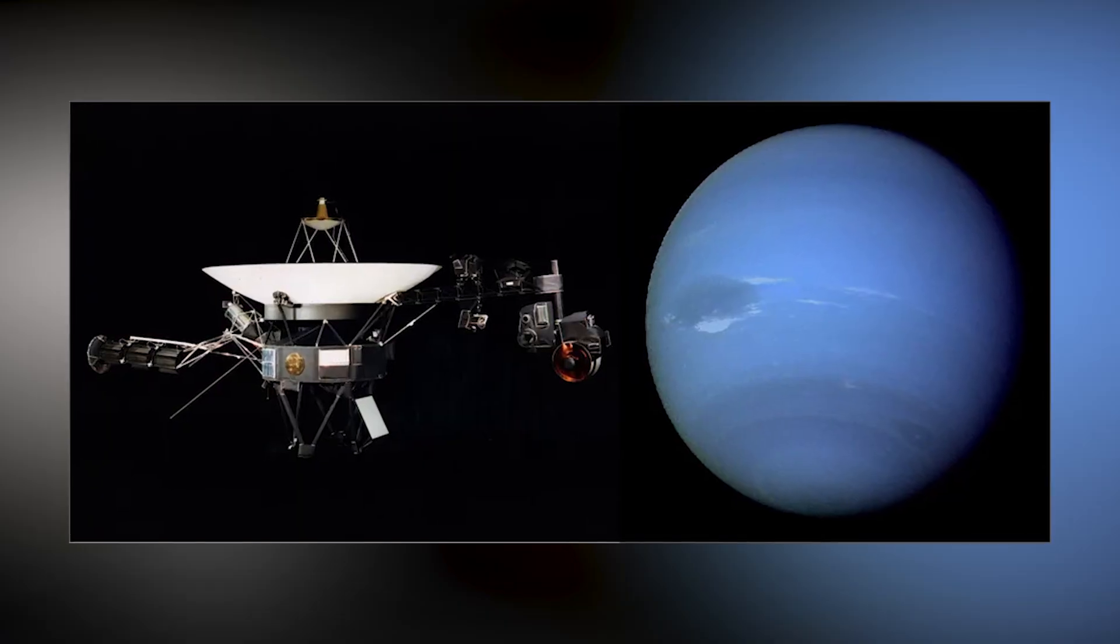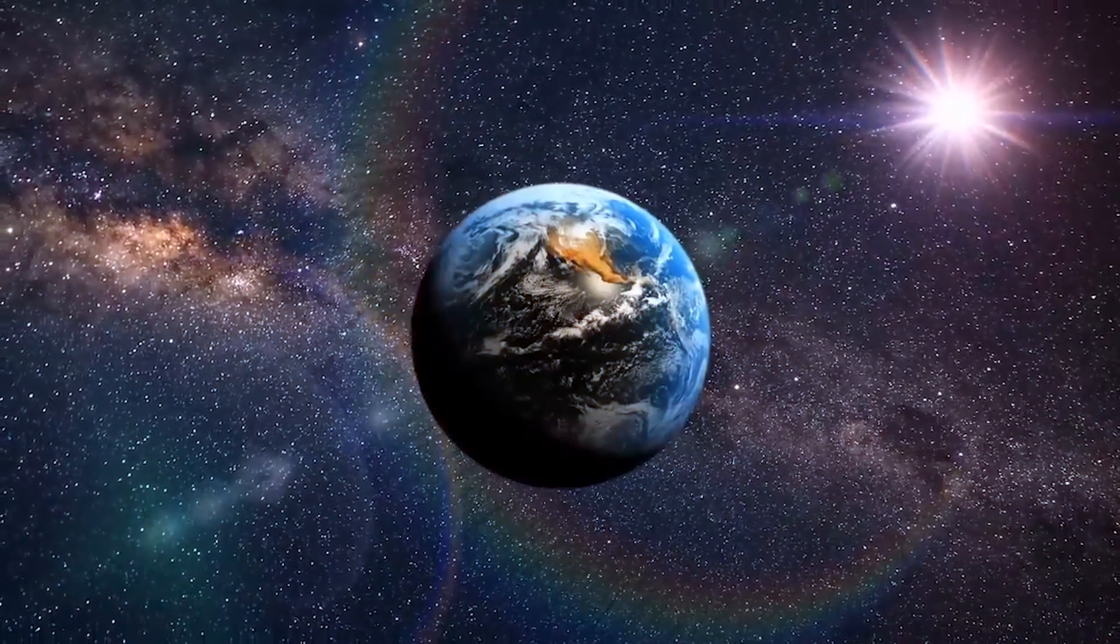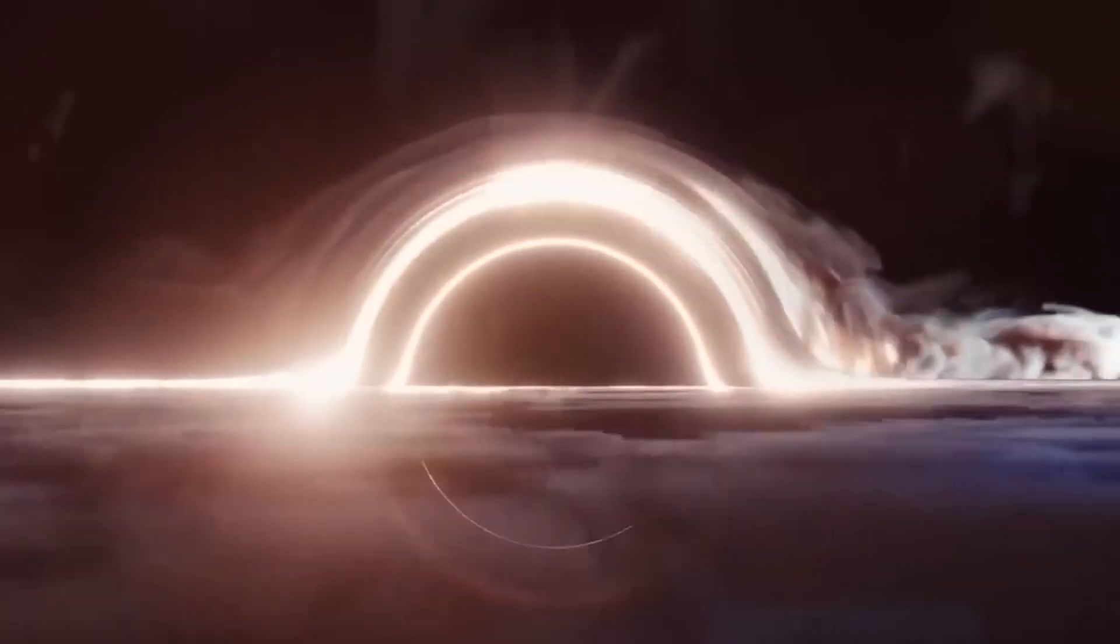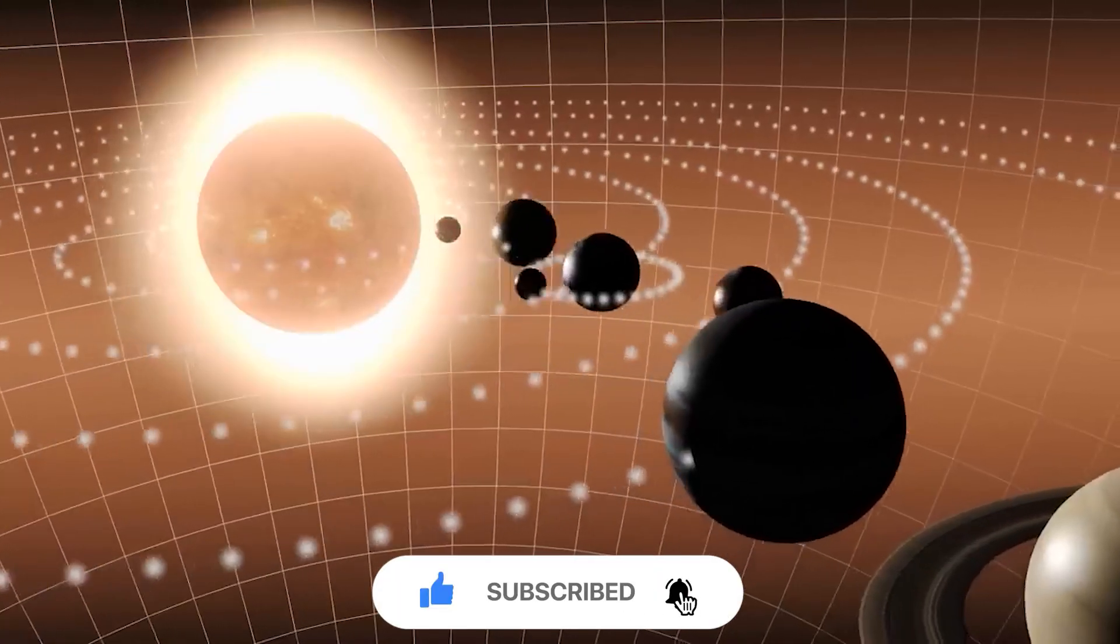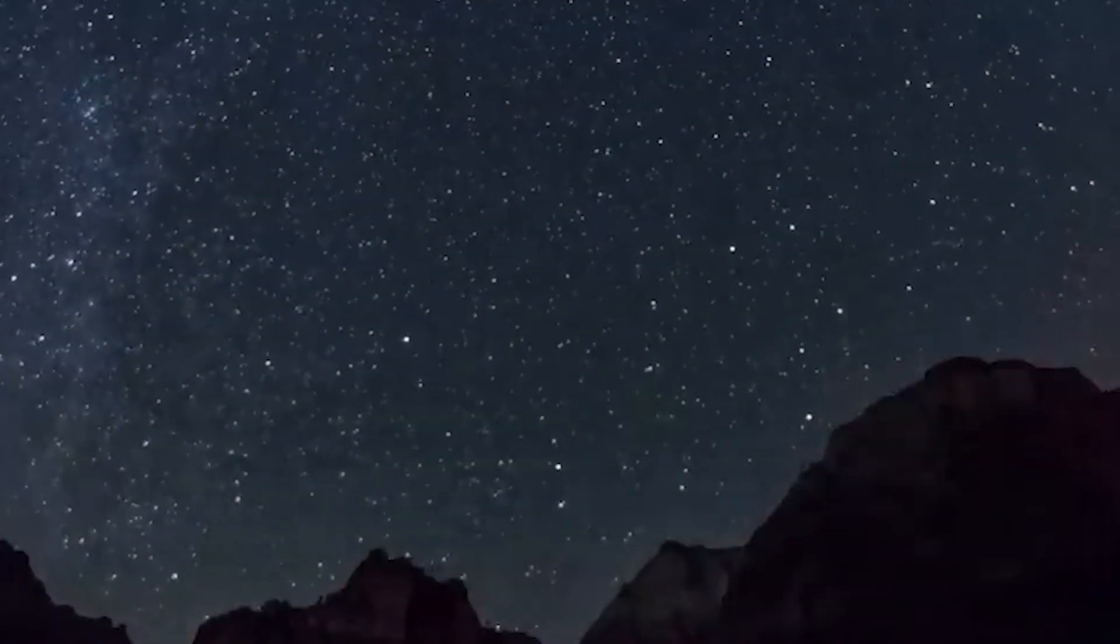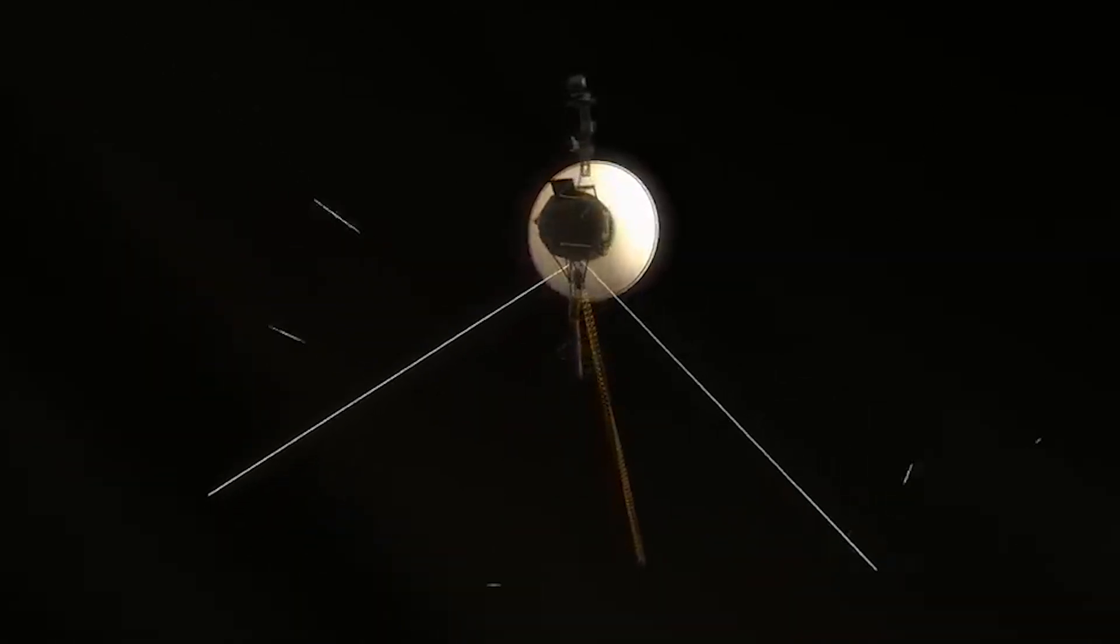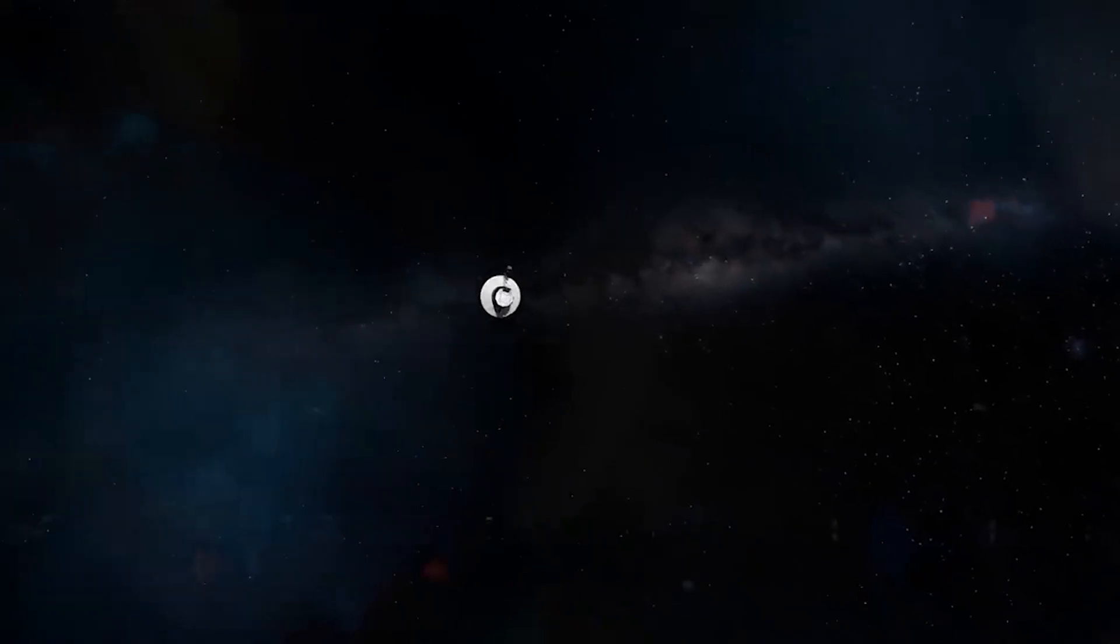Voyager 1's closest encounter with Jupiter was at 1205 UT March 5, 1979, at a range of about 174,000 miles, 280,000 kilometers, following which it encountered several of Jupiter's moons, including Amalthea at a 261,100 mile or 420,200 kilometer range, Io at 13,050 miles or 21,000 kilometers, and Europa at 45,830 miles or 733 kilometers.